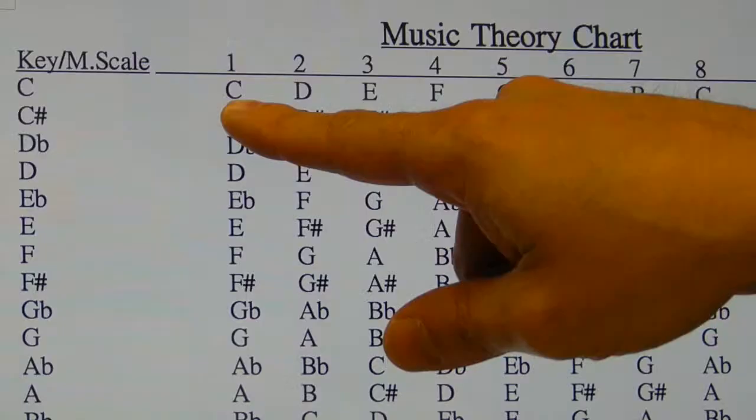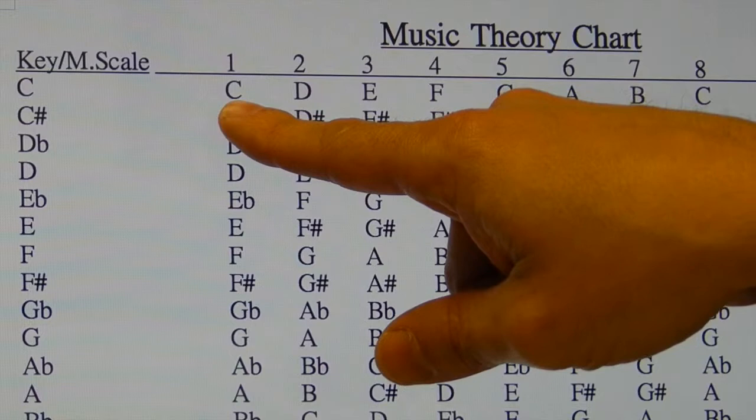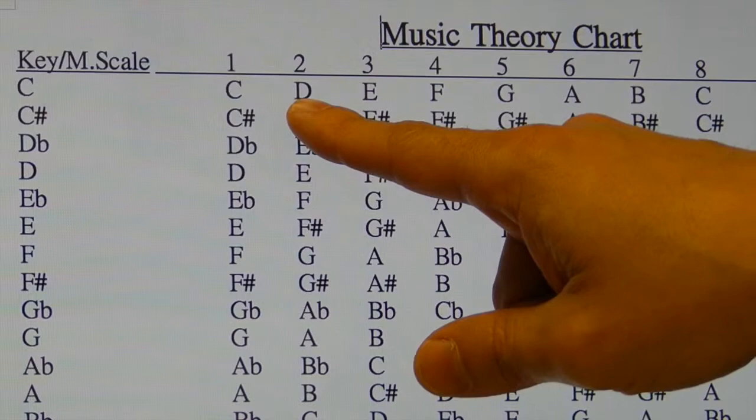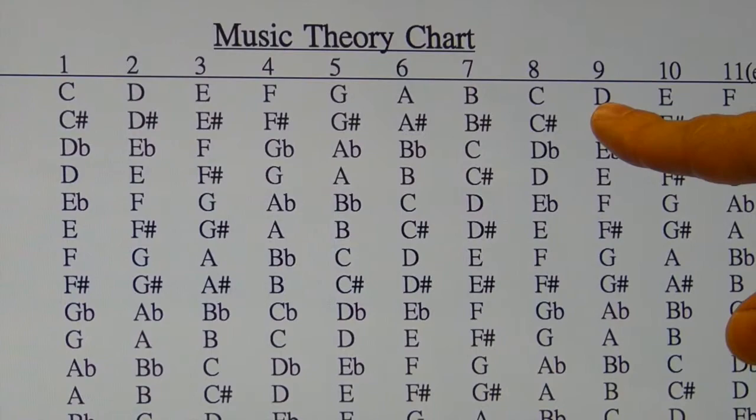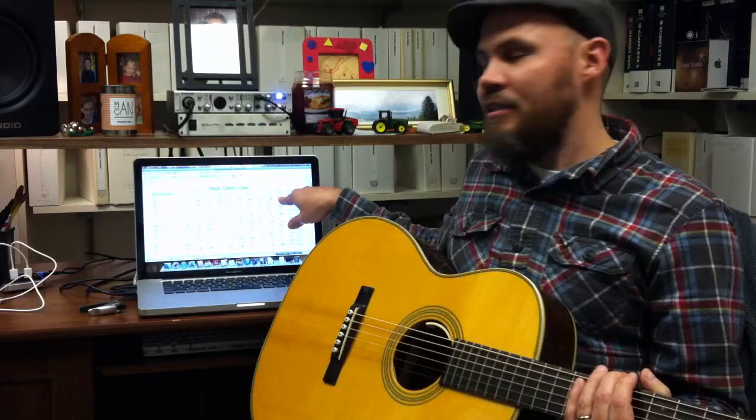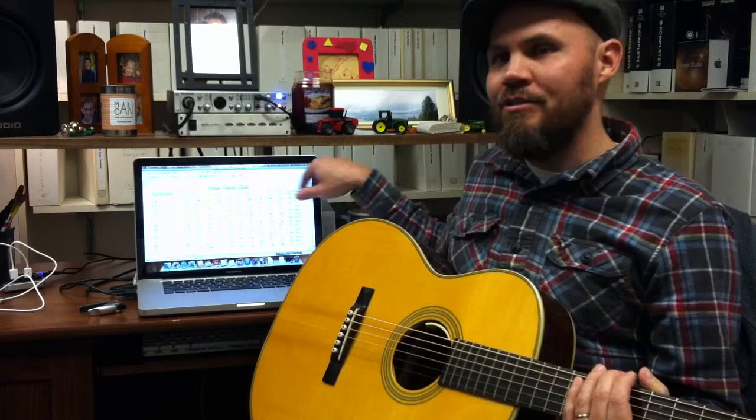So it starts off with C — that's the first note in the scale. The second note in the scale is D, then E, F, G, A, B, and then the eighth note, we're back to C again. We could keep on going from there with the ninth note and the tenth, which are the same as the second and third. It just mirrors itself on up if we continue this line on out.